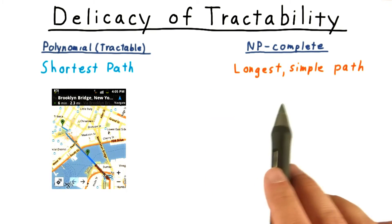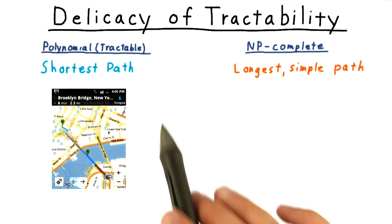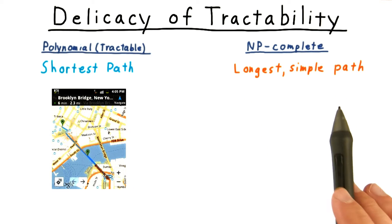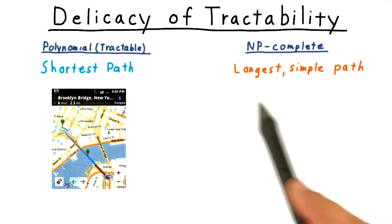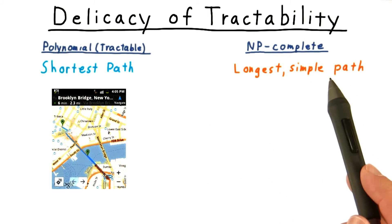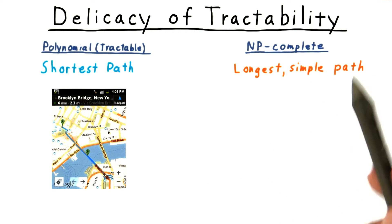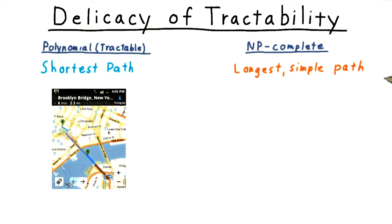Actually, however, we don't even need to change the shortest path problem so much to get an NP-complete problem. Instead of asking for a shortest path, we could ask for the longest simple path. We have to say simple so that we don't just run around in cycles forever. That also would give us an NP-complete problem.